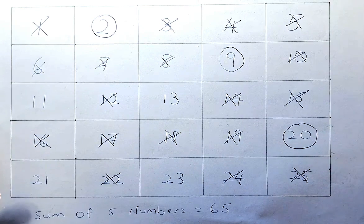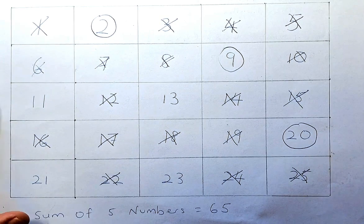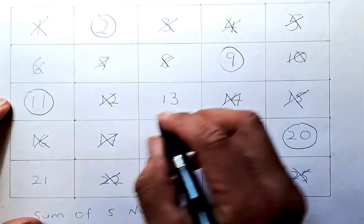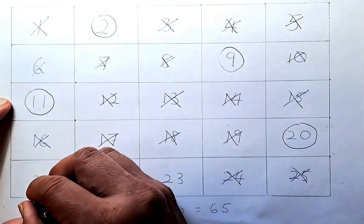Now you have to choose another number. So suppose you decide to choose 11. If you choose 11, then 13 is out and 21 is out.